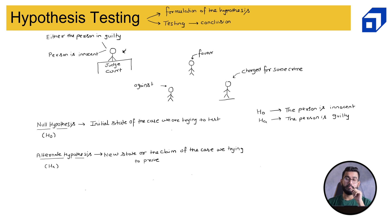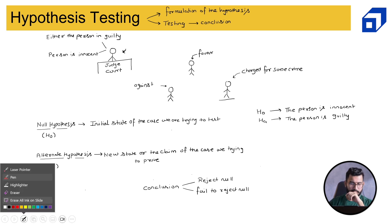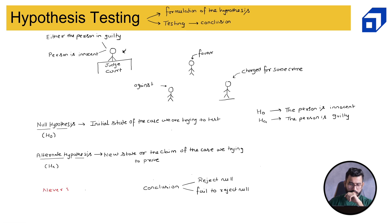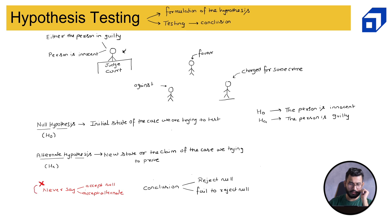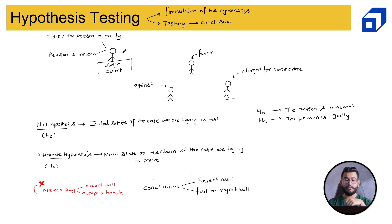Whenever we conclude in hypothesis testing, we say that we either reject null or we fail to reject null. What we never say is we accept null or we accept alternate. The reason we only talk about the null hypothesis in our conclusion is because null hypothesis is something we are certainly know — we are 100% sure that null was true.